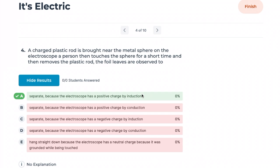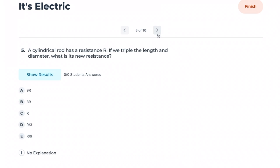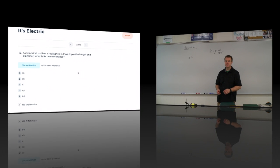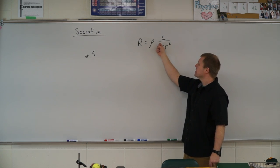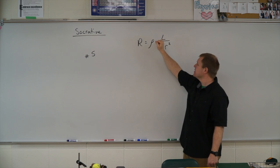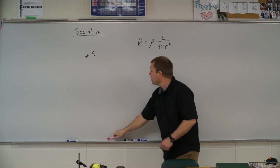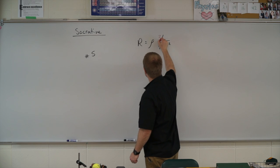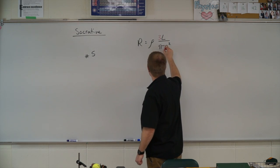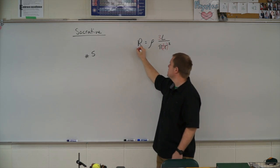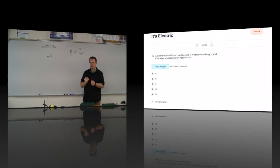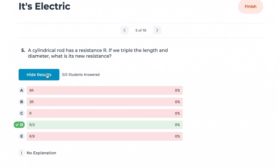The electroscope was positively charged by induction. Number five: a cylindrical rod has resistance R. If we triple both the length and the diameter, what is the new resistance? The area is pi·r², and resistance equals resistivity times length divided by cross-sectional area. Tripling the diameter also triples the radius, so we get three divided by three-squared, giving one-third — the new resistance is R over 3.